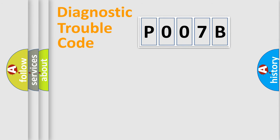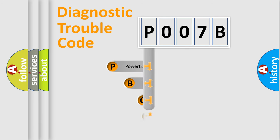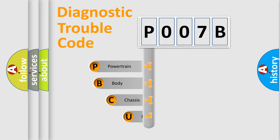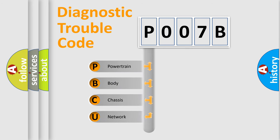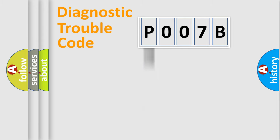First, let's look at the history of diagnostic fault code composition according to the OBD2 protocol, which is unified for all automakers since 2000. We divide the electric system of an automobile into four basic units: Powertrain, Body, Chassis, and Network. This distribution is defined in the first character of the code.